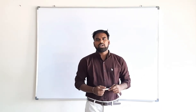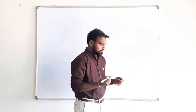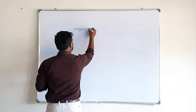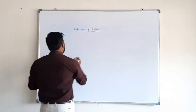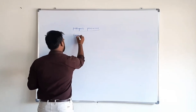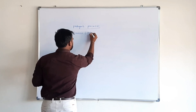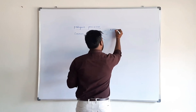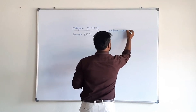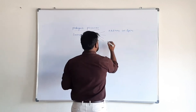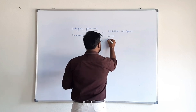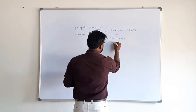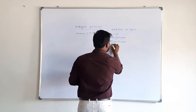Good afternoon friends. Today our topic is pedogenic processes. According to Simonson 1959, there are four basic pedogenic processes: first is additions or gains, second is losses, third is transformation, and fourth is translocation.